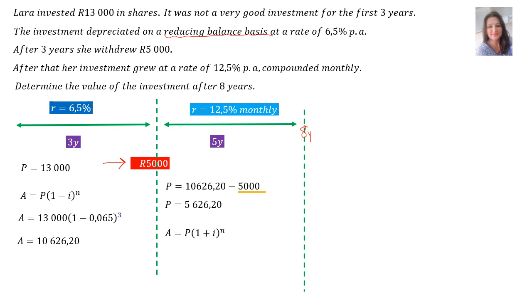But now her investment grew. Therefore, the formula we will use is A equals P bracket 1 plus i to the power of n. The P is 5,626 Rand and 20 cents, bracket 1 plus. The rate is 12.5%, therefore i is 0.125, but it's compounded monthly, so we divide by 12. All of this is happening for a time slot of 5 years times 12, since it's compounded monthly.